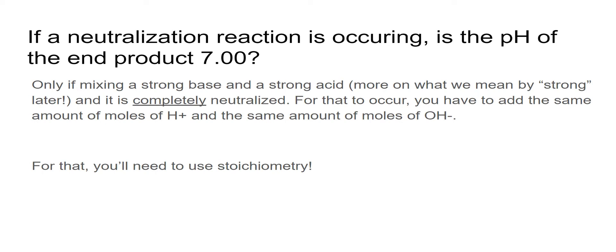Okay, so whenever we're talking about neutralization reactions, students have kind of this misconception that it's always going to have a pH of seven. And that's not quite correct. It's true if you're mixing a strong base and a strong acid, which we'll talk more about what we mean by strong later, and if we're saying something's completely neutralized. And what I mean by completely neutralized is you have to have the same amount of moles of H+ and the same amount of moles of OH-. When we're talking about that, you'll need stoichiometry.